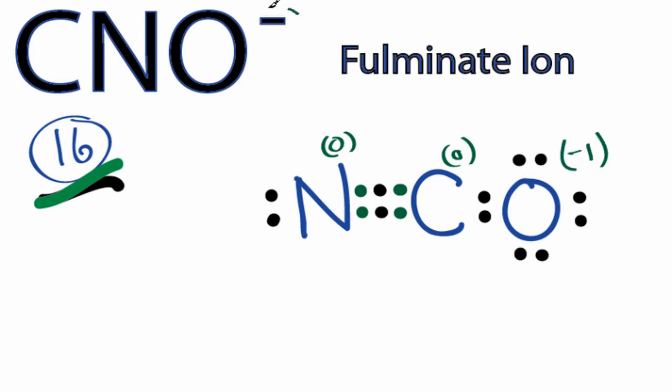But that makes sense because we have a negative charge here as well. So that's the Lewis structure for CNO minus. This is Dr. B — thanks for watching.